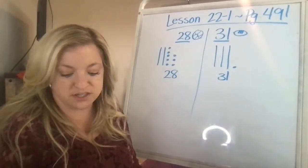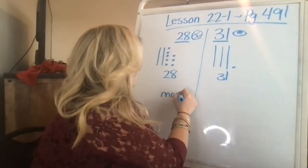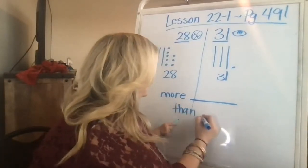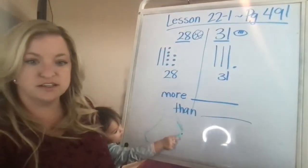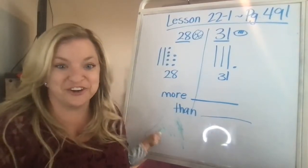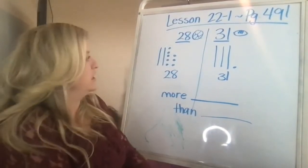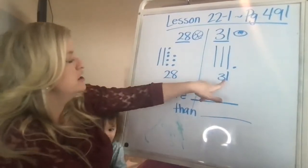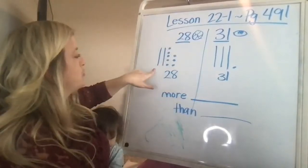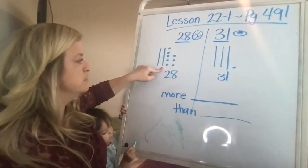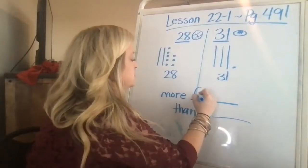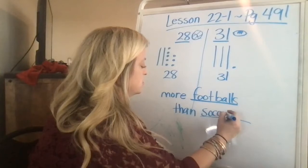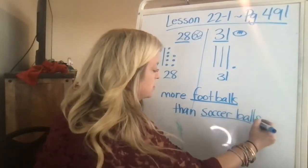Now it says fill in the blanks. There are more blank than blank. Well, if I look at these numbers, it looks confusing because there's eight here and there's only one there, but the tens are bigger because they have 10 of these ones inside of them. So really there's more footballs, footballs, footballs, than soccer balls.